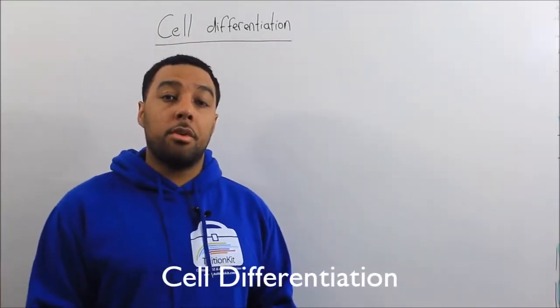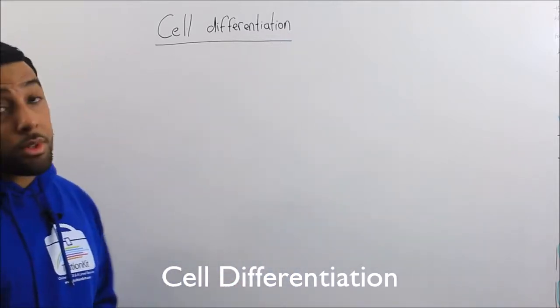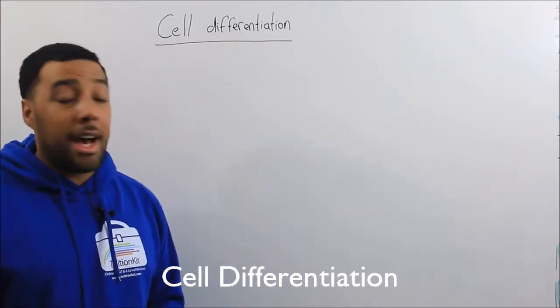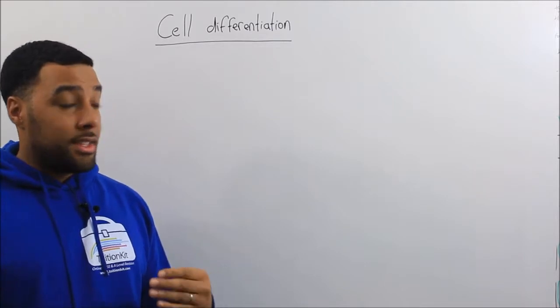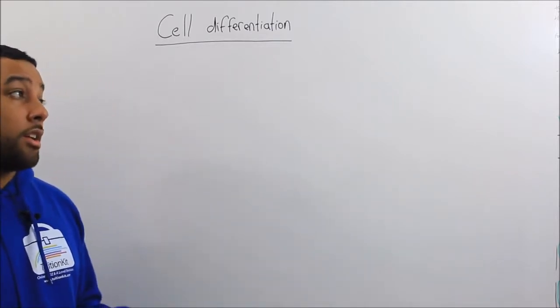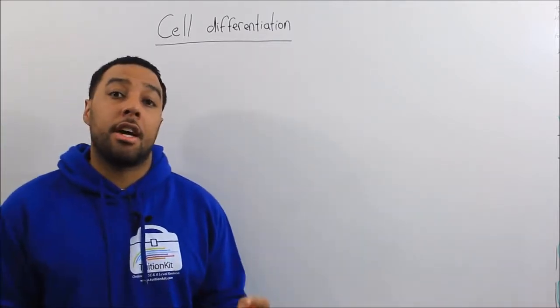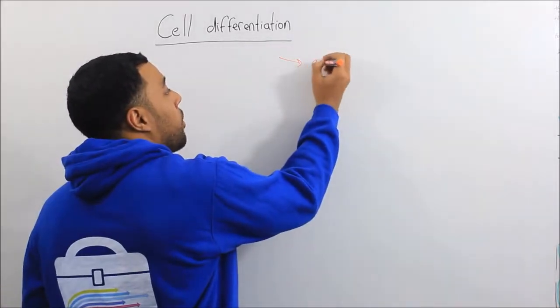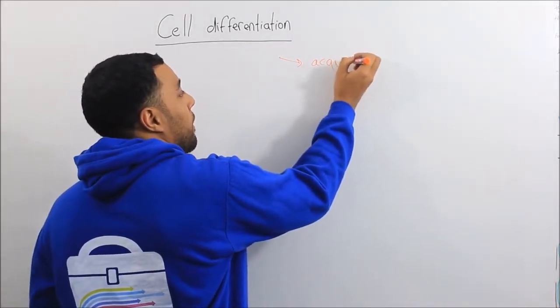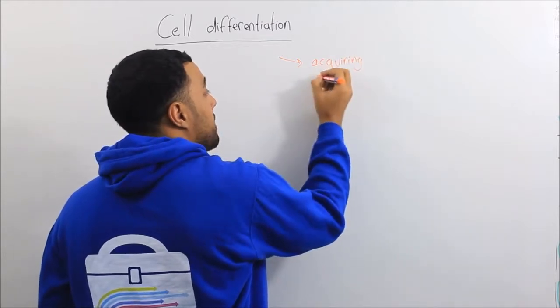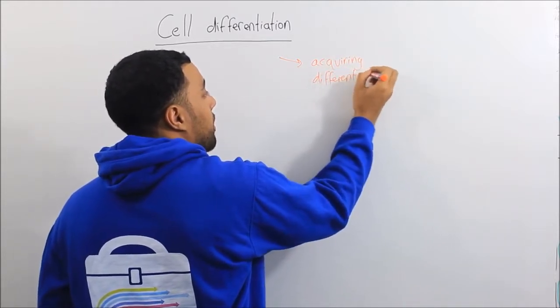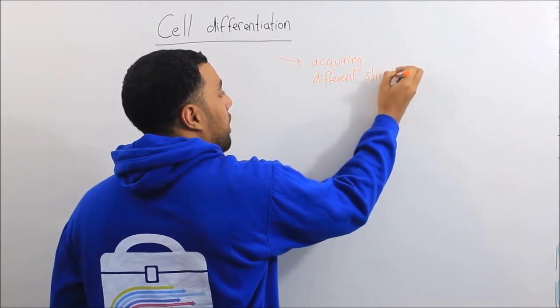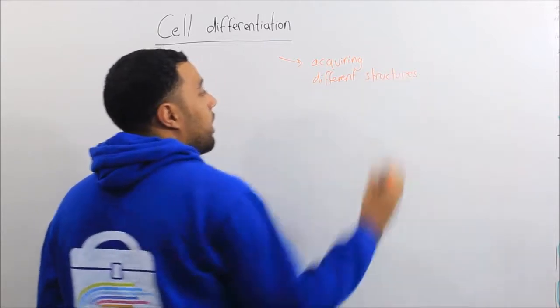Hi guys, welcome to another video. Today we're going to be looking at cell differentiation. As an organism grows, the cells start to differentiate and form different types of cells, and they do this by acquiring different structures.